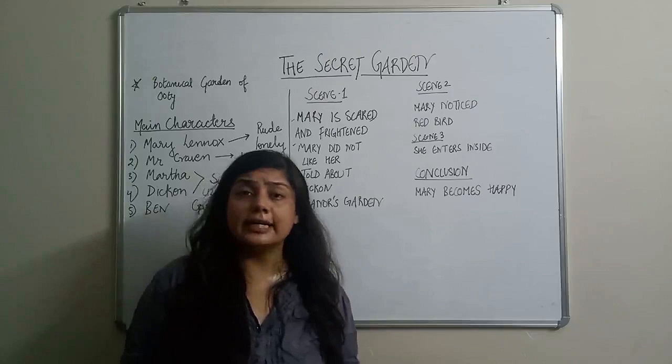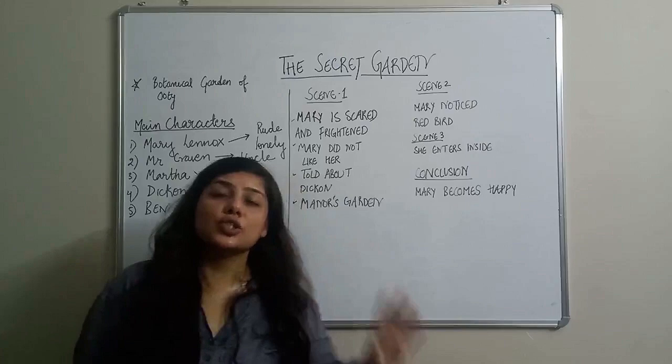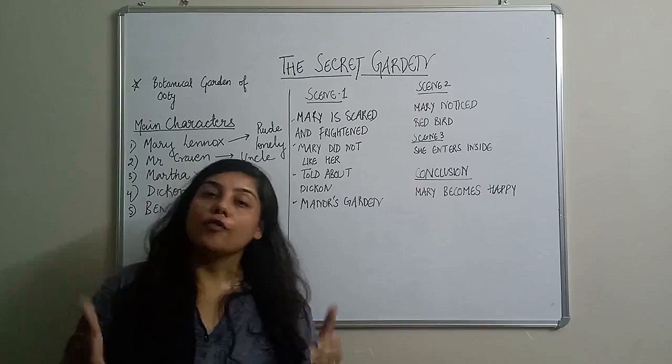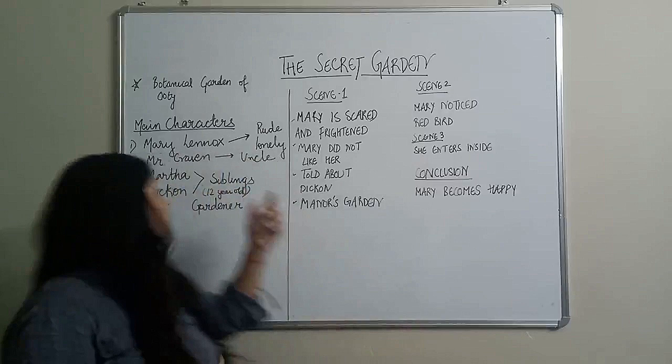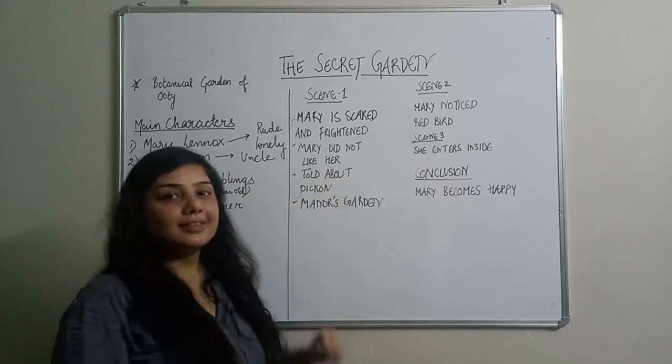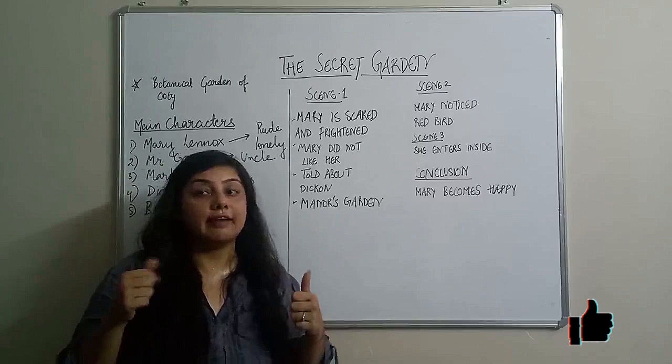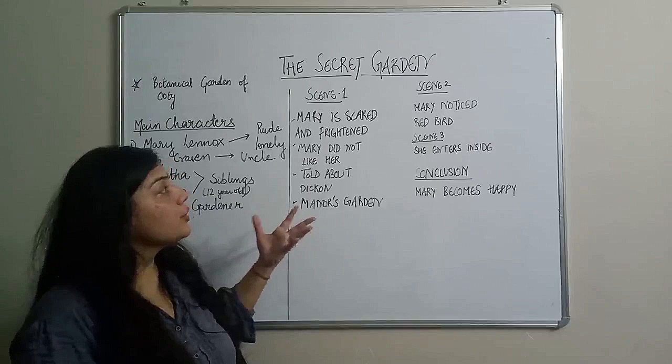Mary became curious and asked why there was a garden where no one could enter. Martha explained that the garden was shut ten years back because it was the garden of the uncle's wife, and since the wife had died, Uncle Craven didn't want anyone to enter it. But Mary was a small girl, so dual thoughts ran in her mind — she immediately thought that while going, she would try to enter the garden.